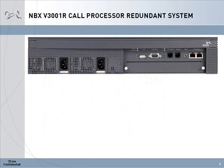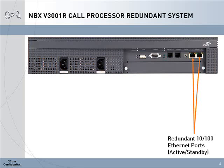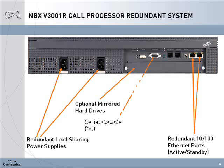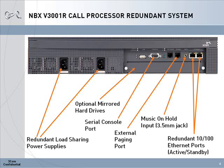The NBX V3001R redundant system is a three-rack unit device. It has redundant features to allow for continuous operation. The NBX V3001R call processor connects to the network with redundant 10/100 Ethernet connections in an active standby configuration. The NBX V3001R also has redundant load-sharing, hot-swappable power supplies, and an option to have mirrored hard drives. The serial port, external paging port, and music on hold port are the same as the V3000 call processor. The feature functionality between the V3000 and V3001R redundant system are identical.